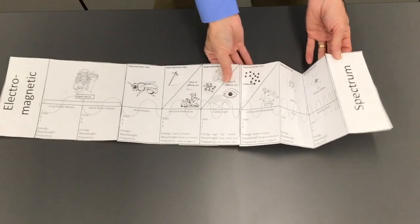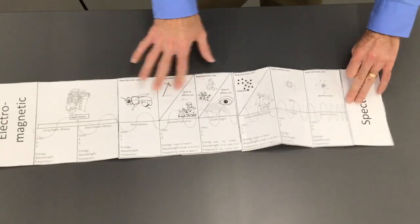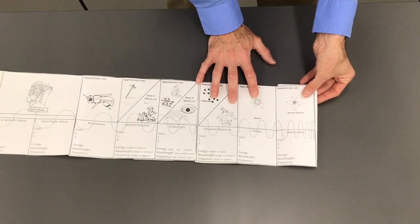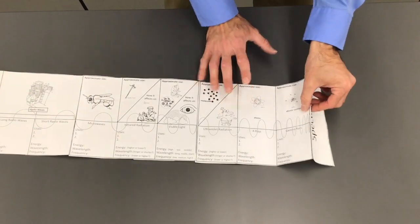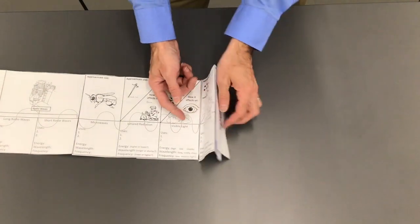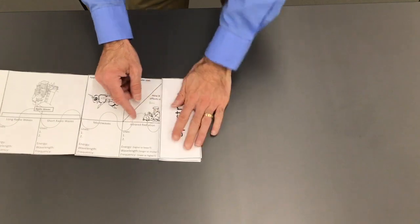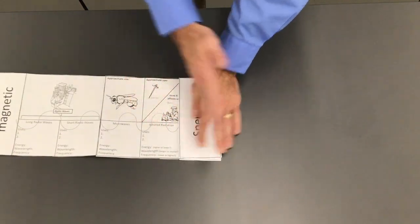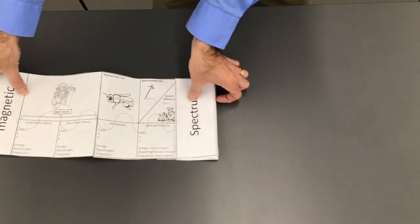So we're going to alternate mountain fold, valley fold, over and over. We take this and fold it behind, so that's a mountain fold. The next one is a valley fold, and then mountain fold behind, in front, and we're going to stop at visible light, halfway across this whole thing.